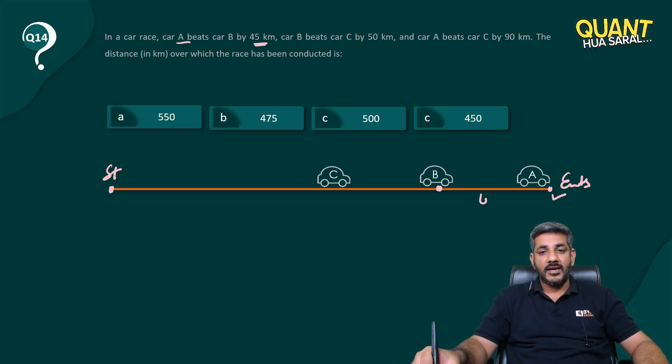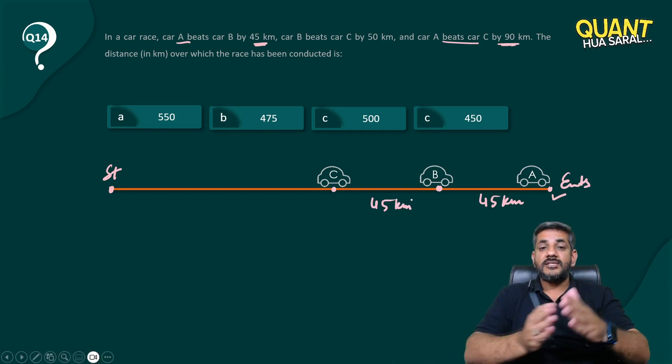And he also says that car A beats car C by 90 kilometers. So C is further another 45 kilometers behind car A. So car B is 45 kilometers behind A and car C is another 45 kilometers behind B.